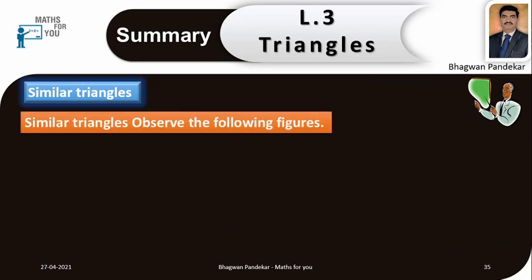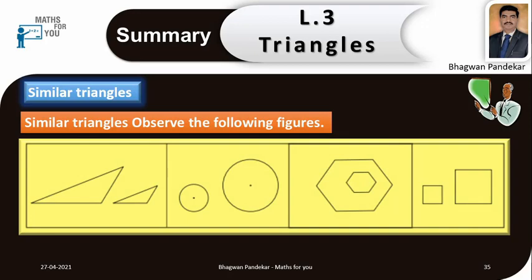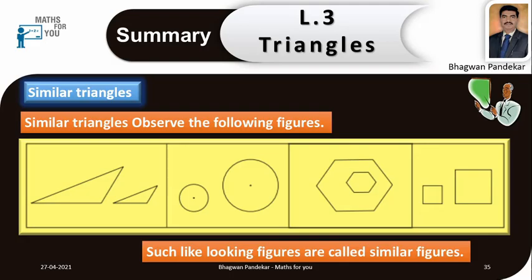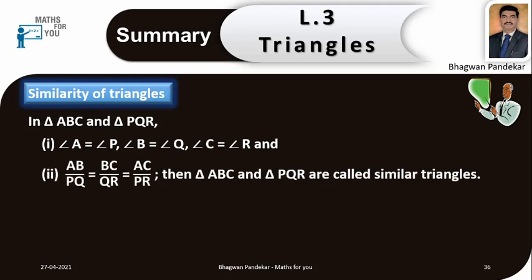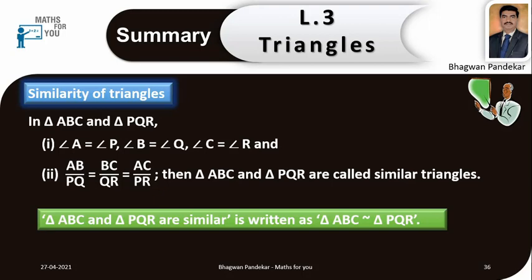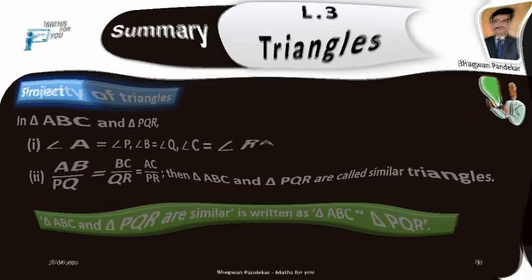Similar triangles: observe the figures — the pair of figures in each part have the same shape but different sizes. They are not congruent; such alike-looking figures are called similar figures. Similarity of triangles: in triangle ABC and triangle PQR, if angle A = angle P, angle B = angle Q, angle C = angle R, and AB/PQ = BC/QR = AC/PR, then triangle ABC and triangle PQR are called similar triangles, written as triangle ABC ∼ triangle PQR.